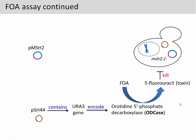In concept mapping, we use arrows to indicate positive connections and blocks to indicate negative connections. From the previous slide, we know that the URA3 gene is fused to a microsatellite sequence, which is prone to mutation. Therefore, a frameshift mutation has a tendency to inactivate the URA3 gene. This is a negative connection illustrated by a block.